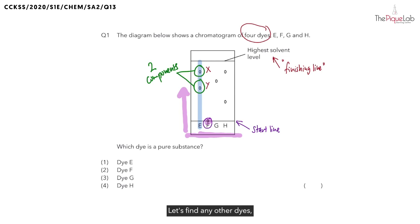Let's find any other dye which is also made up of two components. We are looking for two dots in the results. And which sample gives you that? We have sample H. So we know sample H is also made up of two components. Let's write that down.